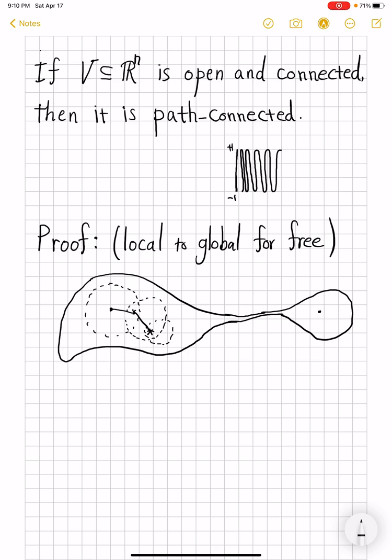So to mitigate that, we use this trick of local to global. We fix some x in V and we define a set Vₓ to be the set of all y's in V such that there exists path from x to y.